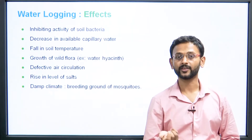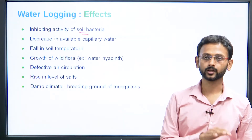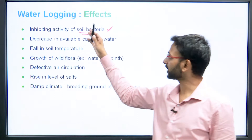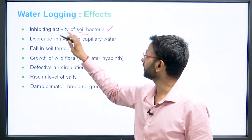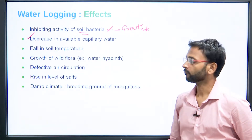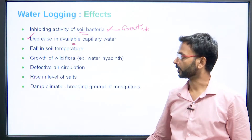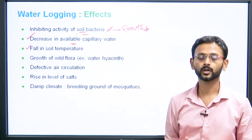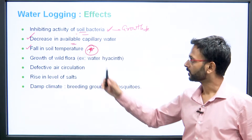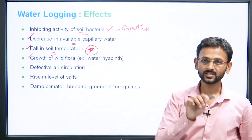Now the effects of water logging: First is inhibiting activity of soil bacteria. Soil bacteria require a specific temperature, atmospheric pressure, and suitable conditions for favorable growth to actively function. Due to water logging, their activity is inhibited and plant growth is hampered. Second is a decrease in available capillary water — plants usually take water via capillary water, not directly from the water table. Third is a fall in soil temperature — higher temperature is preferred for plant growth.